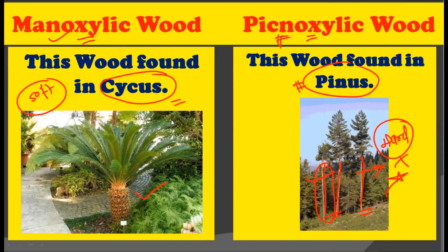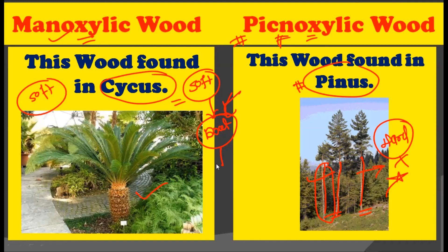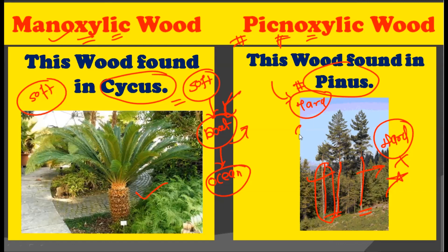Pachyxylic wood is economically more important compared to Manoxylic wood. However, the softwood from Manoxylic wood can be used in boat-making, useful for travelling across oceans. Manoxylic wood can be used to prepare boats, while the hardwood provided by Pachyxylic wood is useful for construction purposes and other purposes.